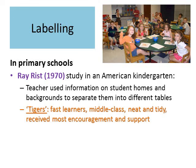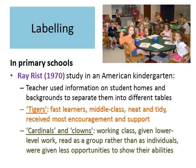One table was known as the tigers — the fastest learners, who tended to be middle class. They were often seen as neat and tidy and received the most encouragement and support, with teachers spending most of their time with them. Two other groups were known as the cardinals and the clowns. These students tended to be working class, were often given lower level work, and when engaging in reading, they read as a group rather than as individuals, receiving fewer opportunities to show their abilities. Once again, working class students appear to be disadvantaged.